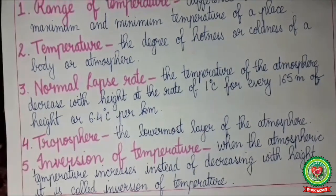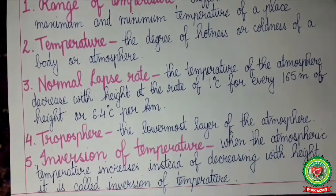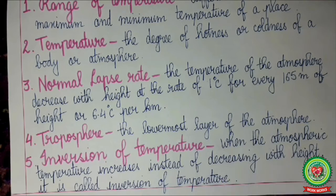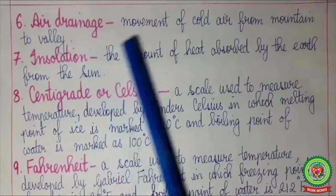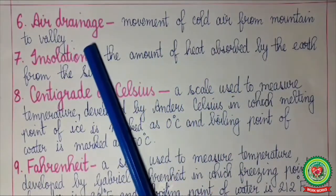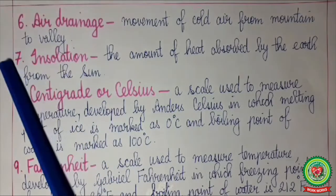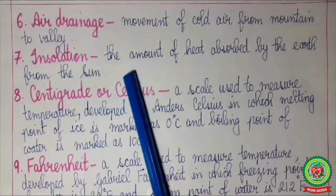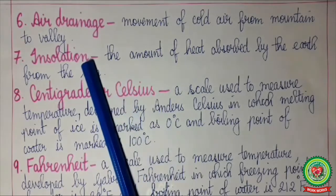Inversion of temperature: when the atmospheric temperature increases instead of decreasing with height, it is called inversion of temperature. Air drainage: the movement of cold air from mountain to valley is called air drainage. Insolation: the amount of heat absorbed by the Earth from the sun is called insolation.